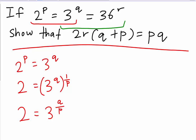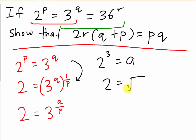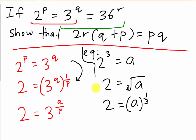Let me give you some idea about this step. For example, say 2^3 equals A. If I move my power of 3 to the other side, it actually becomes the cube root, which is the same idea as A^(1/3). That's what happens here — just an example so you understand. At the end I get: 2 equals 3^(Q/P). That's my first equation.